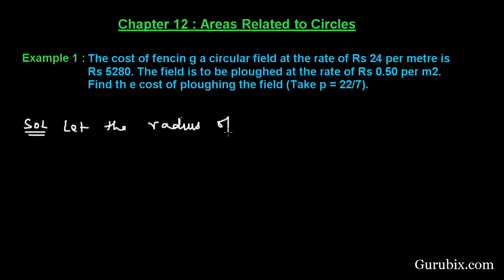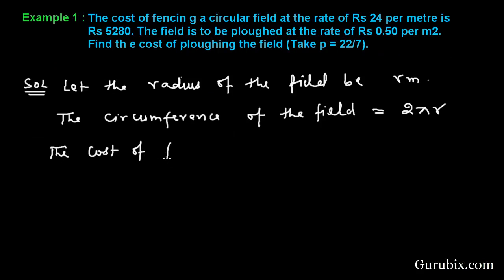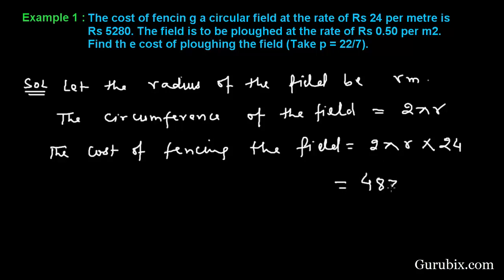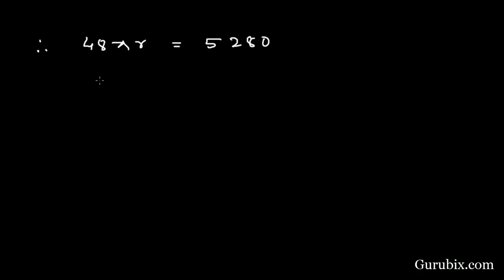Let the radius of the field be r meters. Therefore, the circumference of the field will be 2πr, and the cost of fencing the field will be 2πr multiplied by 24, which equals 48πr. The total cost of fencing is given as rupees 5280, therefore 48πr equals 5280.